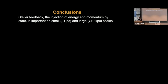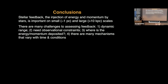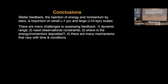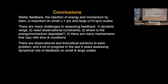So the conclusions for this talk are that stellar feedback — which I define as the injection of energy and momentum by stars — is important on both large and small scales. And because it's involved in so many different scales, that's one of the challenges in terms of assessing feedback. There's also the need for observational constraints, the question of where and when energy and momentum are deposited, and the fact that there are many mechanisms that must be considered, varying in time and conditions. In the last five years, there's been a lot of progress in coming up with observational and theoretical solutions.